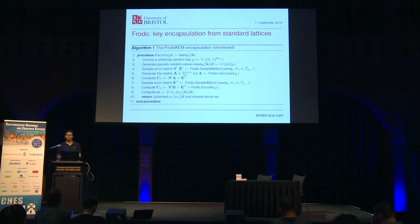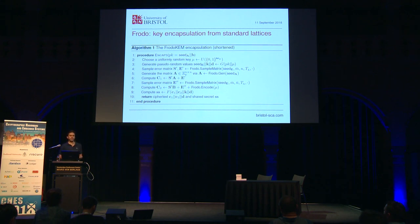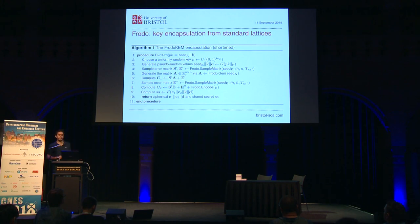Here's a shortened version of the encapsulation module. The main operations within Frodo's encapsulation scheme are essentially in lines 6 and 8, where we do the learning with errors calculation. This consists of a matrix-matrix multiplication with addition of an error distribution. We also have pseudo-random number generation in the first few lines, as well as generating matrices from the error distribution. In line 9, we use a random oracle to ensure CCA security, which takes in the ciphertext and keys and creates a hash.